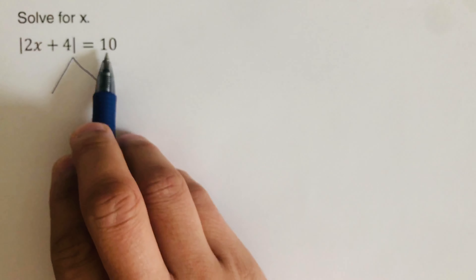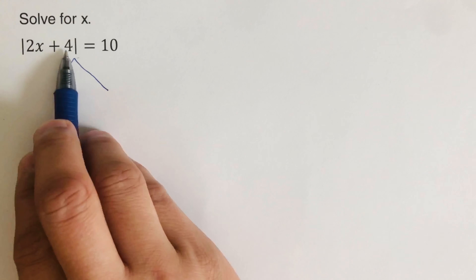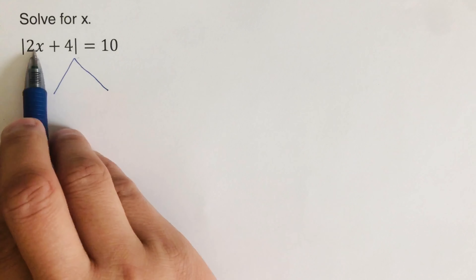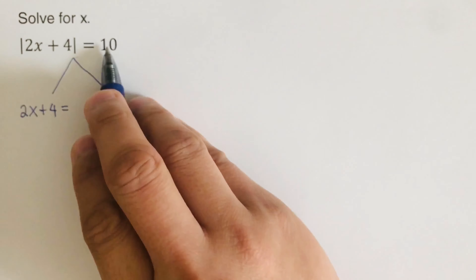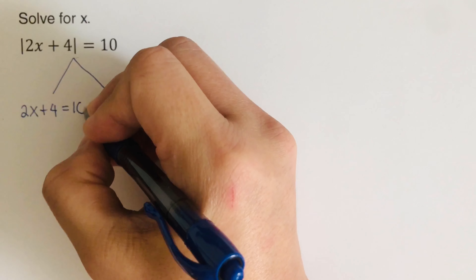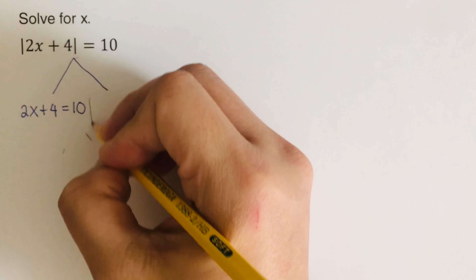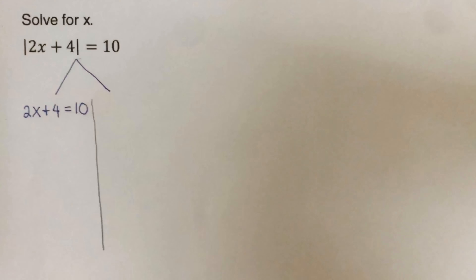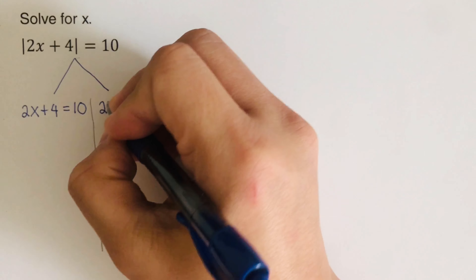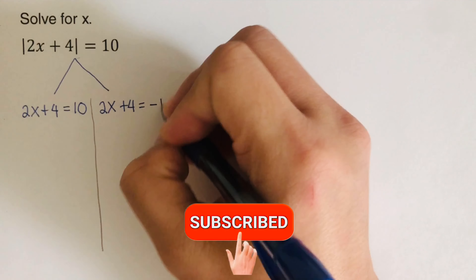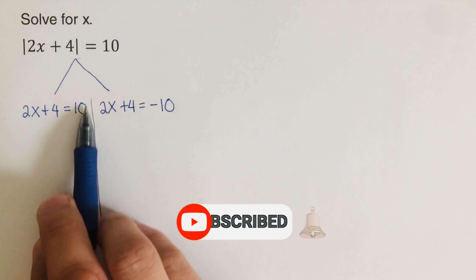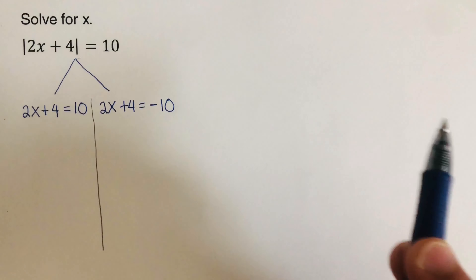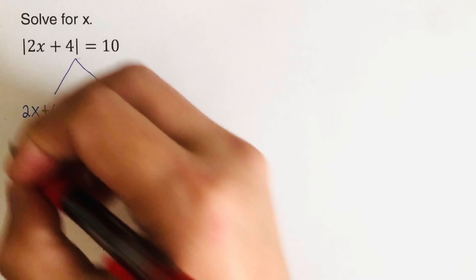We break this up into two parts. The positive component: 2x + 4 = 10. The negative component: 2x + 4 = -10. That's step two — we break this into two equations, the first with positive a and the second with negative a. This works because a is positive.